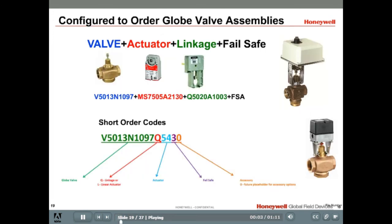Honeywell also offers configure to order globe valve and actuator assemblies. These valve assemblies are available with over 60 different types of actuators including linear pneumatic and electric actuators and rotary direct couple actuators with linkages. The assembly numbers are built based on the specifications of the valve actuator and linkage if a rotary actuator. This enables you to mix and match valve and actuators to create the combination you need.